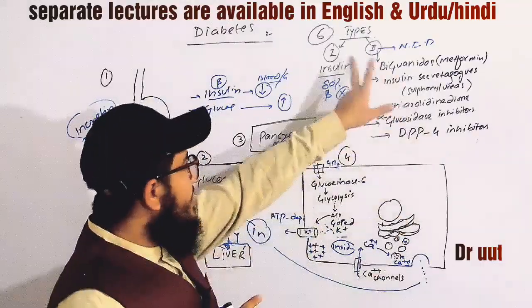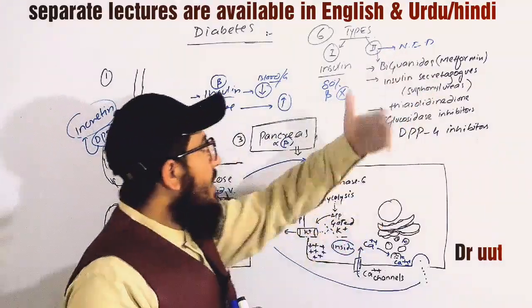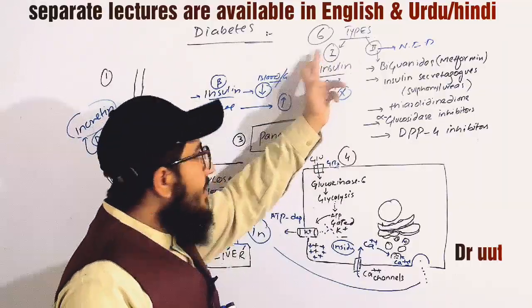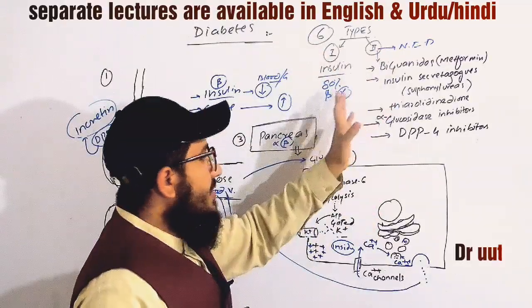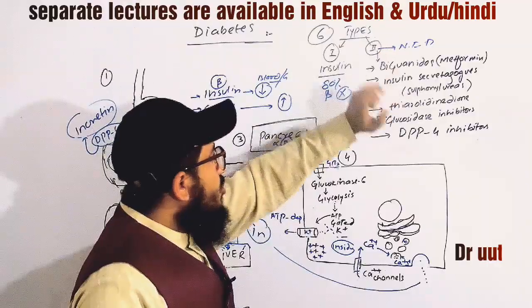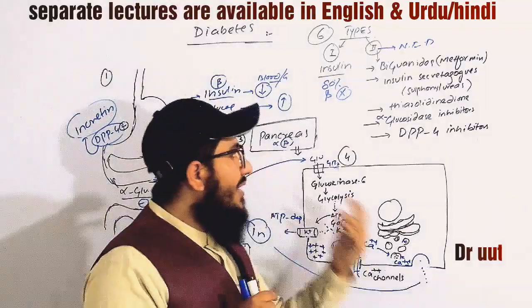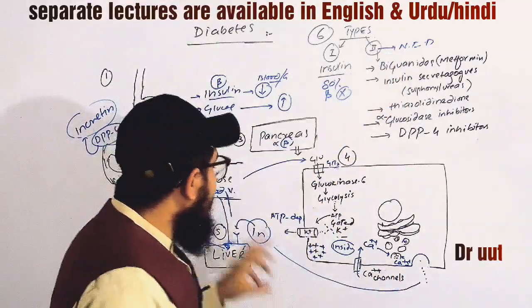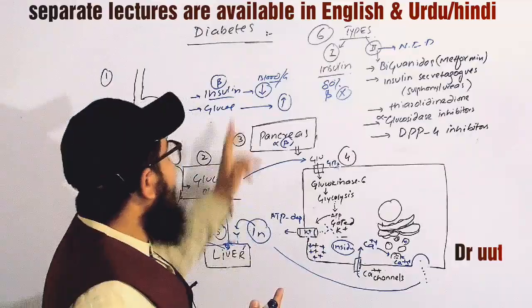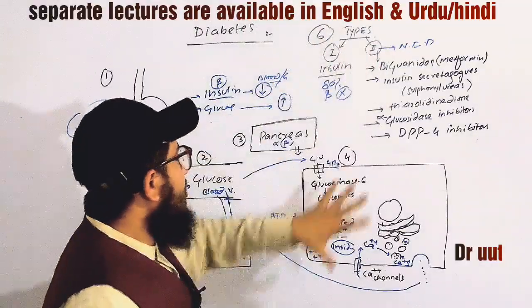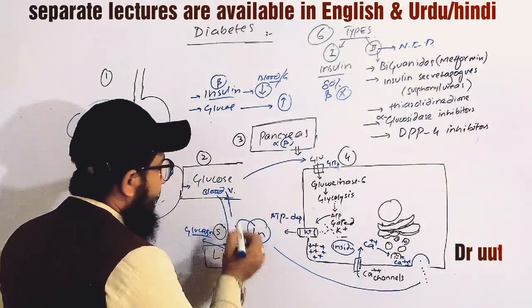In type 2, it is called non-insulin dependent diabetes mellitus. Type 1 is insulin dependent because insulin is not available due to 80% of beta cells being damaged. In type 2, insulin is actually present, but the insulin receptors are not functional. So it is still called diabetes, type 2 diabetes, because even though insulin is present, the receptors are not working properly.